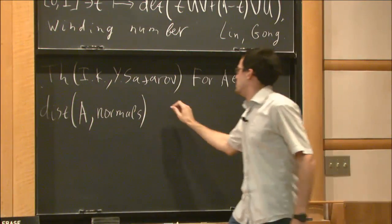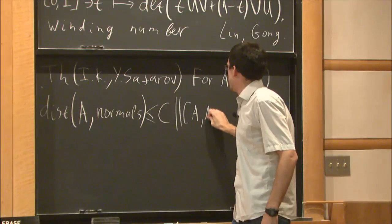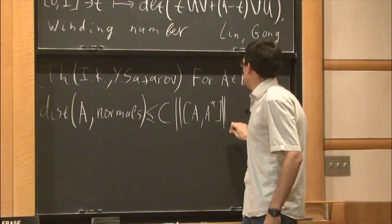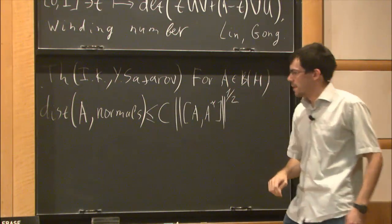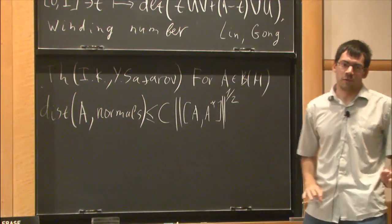In general, the second term equals the following: plus supremum over lambda in C of the distance from A minus lambda identity to the invertible operators, GL(H). So A minus lambda identity is just A minus lambda identity.